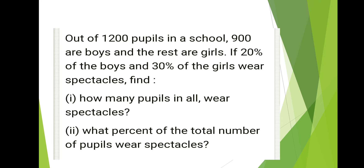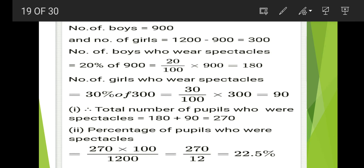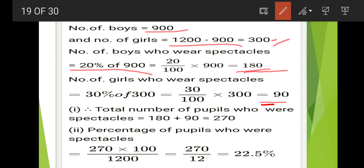Next: out of 1,200 people in a school, 900 are boys and the rest are girls. If 20 percent of the boys and 30 percent of the girls wear spectacles, find how many people wear spectacles and what percent of the total wear spectacles. Number of boys is 900, number of girls is 1,200 minus 900 equals 300. Boys wearing spectacles: 20 percent of 900 equals 180. Girls wearing spectacles: 30 percent of 300 equals 90.